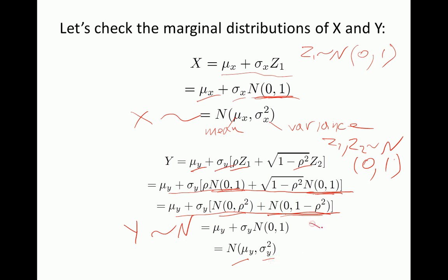Therefore y also follows a normal distribution with mean mu y and variance sigma y squared. So both x and y are normally distributed, just like z1 and z2. However, while z1 and z2 were independent, this is no longer the case for x and y — their dependence depends on the value of rho.